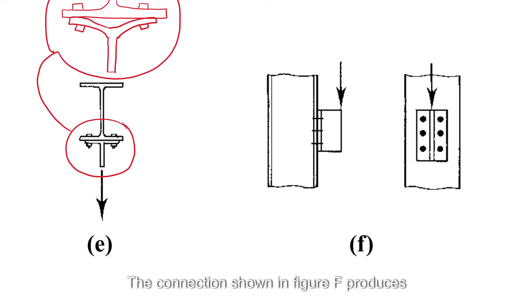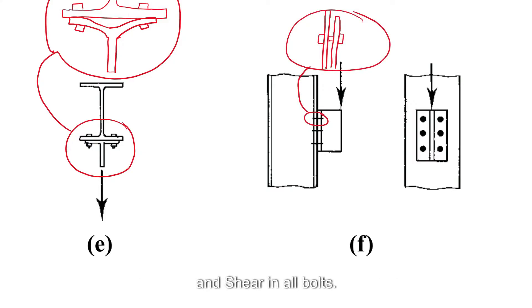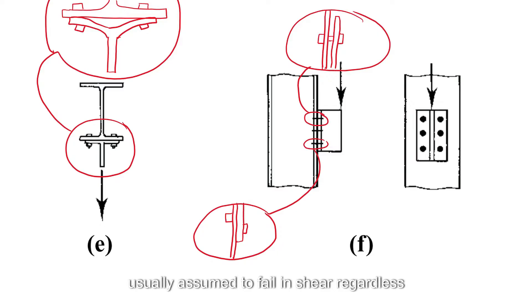The connection shown in figure F produces both tension in the upper row of fasteners and shear in all bolts. Welds are weak in shear and are usually assumed to fail in shear regardless of the direction of loading.